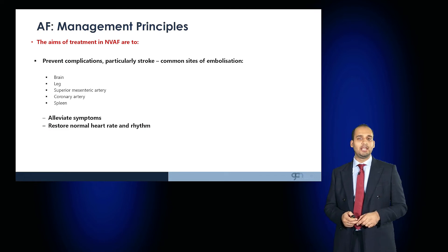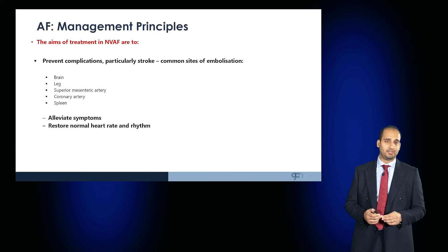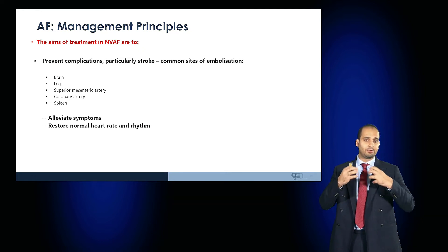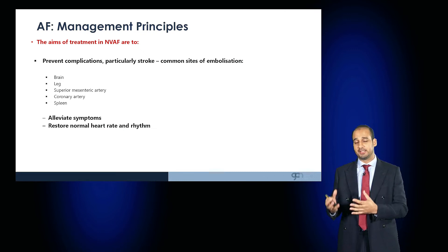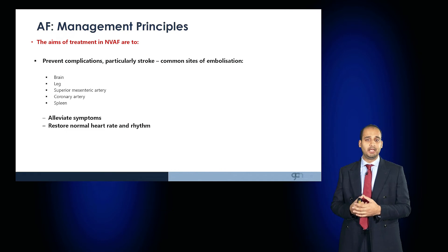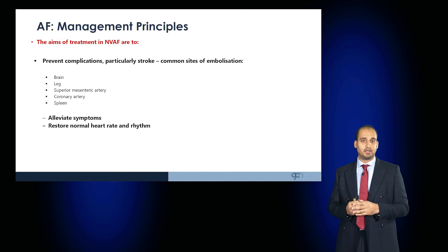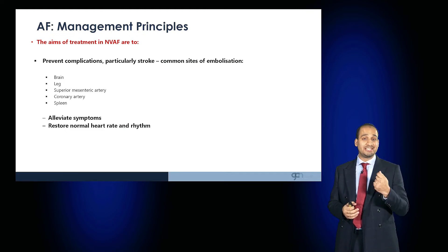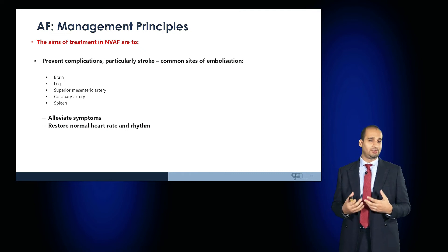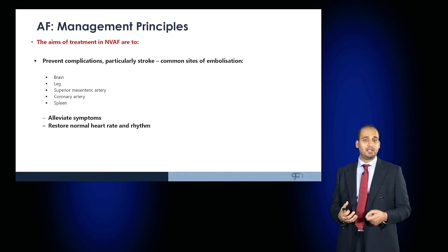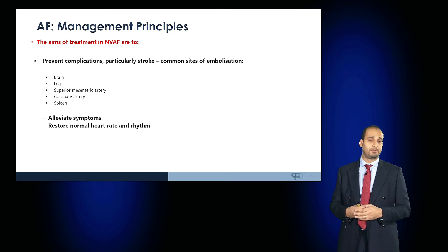A key consideration in AF is that when the atria are fibrillating and not contracting effectively, there is relative stasis of blood, which — using Virchow's triad — is a risk factor for blood clot development. Sites of potential embolism include the brain causing stroke, the leg causing DVT, the superior mesenteric artery causing mesenteric angina, the coronary artery causing MI, the spleen causing splenic infarct, or the lungs causing pulmonary embolism.